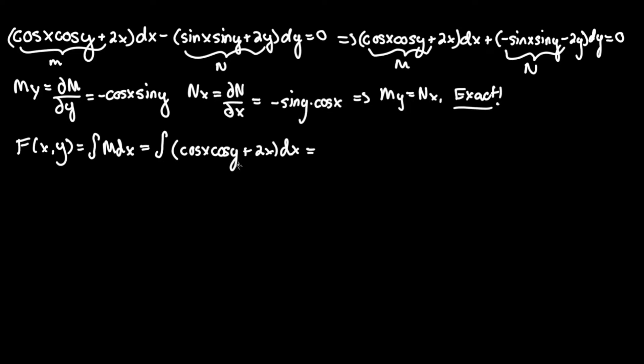So here now we are integrating with respect to x, so the cosine y is treated as a constant. So let's put that out in the front: cosine y. And what's the derivative of cosine x? That's just sine x, so times sine x.